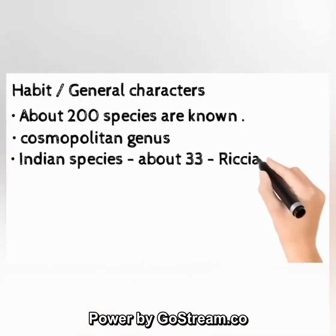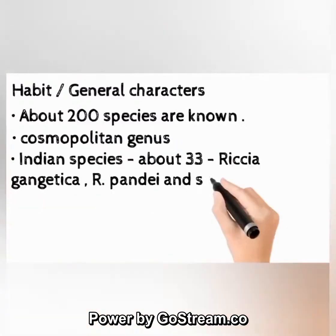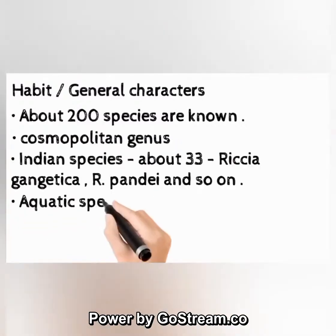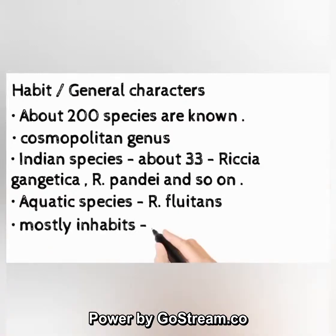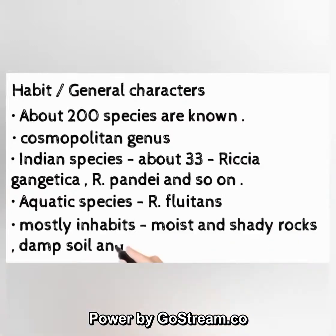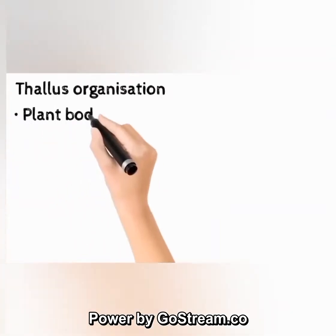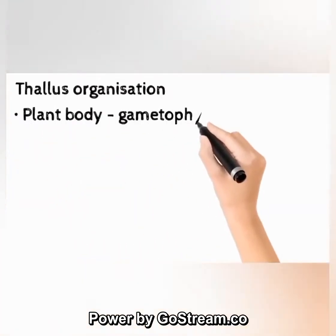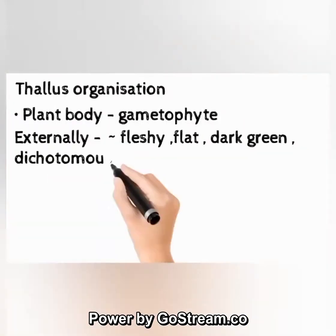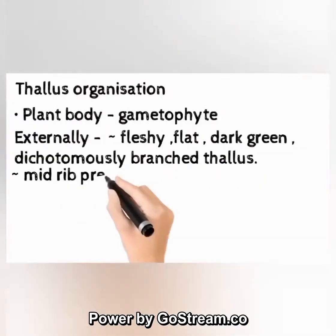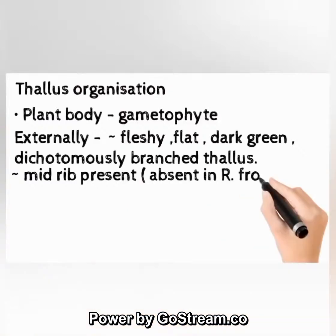Aquatic species include R. fluitans. Riccia mostly inhabits moist and shady rocks, damp soil, and similar habitats. Thallus organization — plant body (gametophyte): externally a fleshy, flat, dark green, dichotomously branched thallus. Midrib is present but absent in R. frostii. The thallus is marked with a furrow or dorsal groove.